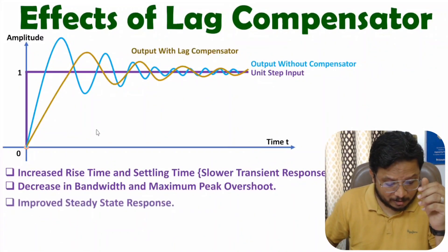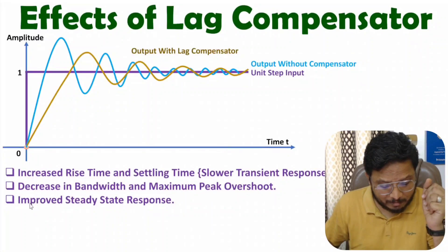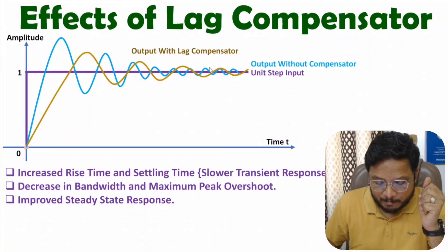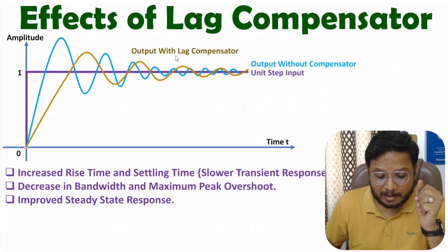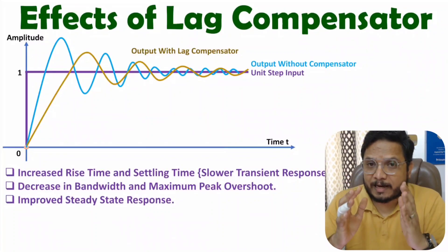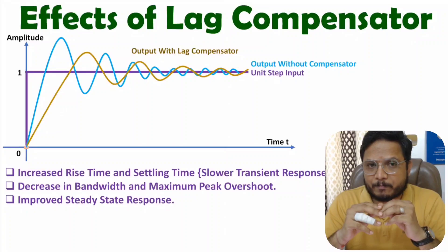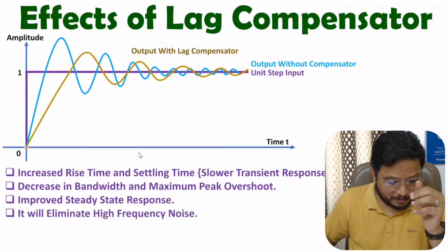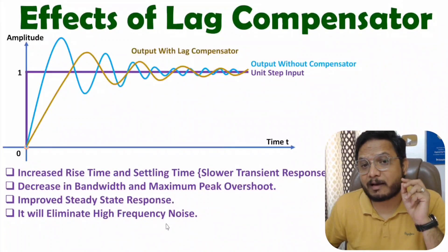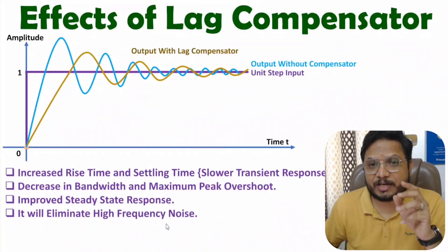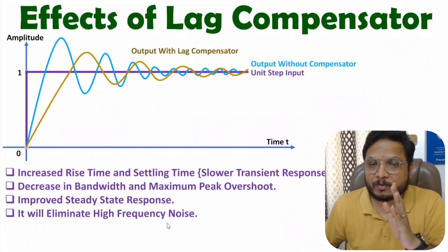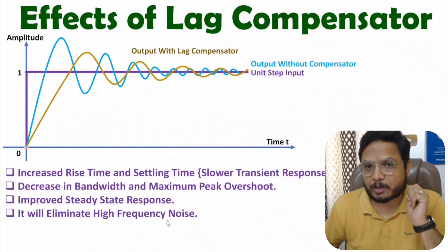If you talk about Lag Compensator, then with Lag Compensator there will be improved steady state response. Here you will be observing we will be having improved steady state response with Lag Compensator. Improved steady state response means there will be lower offset with Lag Compensator. One more thing that you need to understand — it will eliminate high frequency noise. Why will it eliminate high frequency noise? The reason is Lag Compensator acts like a low pass filter. So if you add Lag Compensator with the system, then it will eliminate high frequency noise.